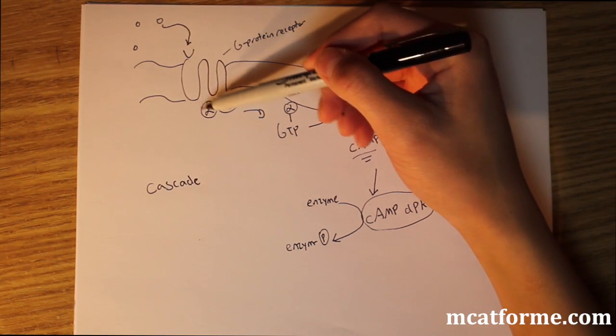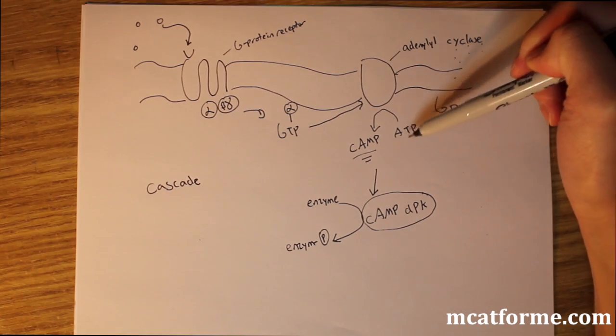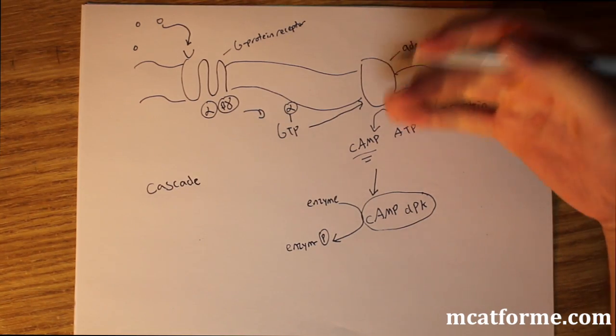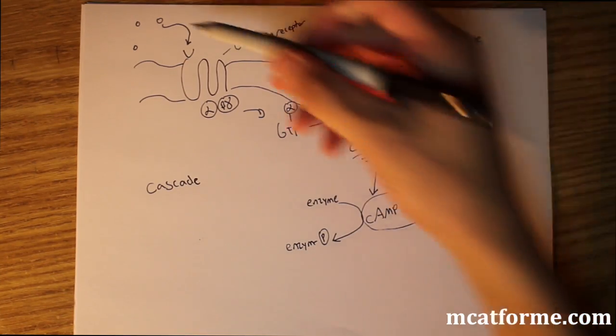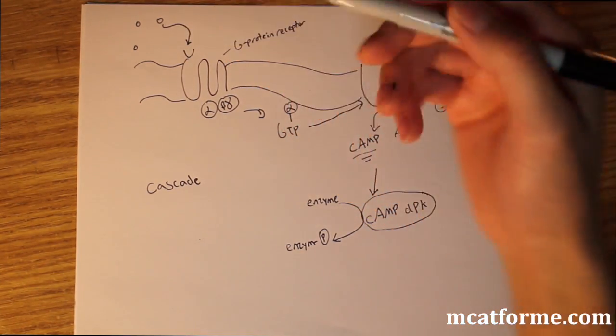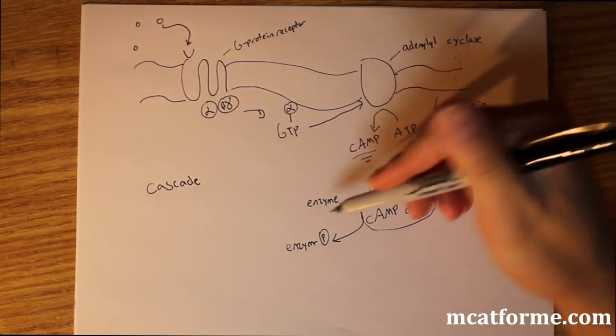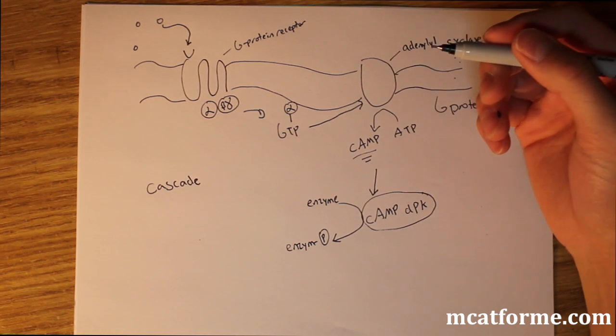One little receptor, one little protein will go on to act on many, many, many different molecules, and it will have a cascade effect. That's why it's so rapid, because one little protein can have a great effect. And it will affect it by phosphorylating these enzymes.